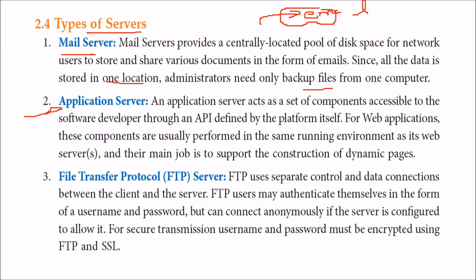An application server acts as a set of components accessible to software developers through an API — Application Programming Interface — defined by the platform. For web applications, these components usually run in the same environment as the web server. Their main job is to support the construction of dynamic pages.